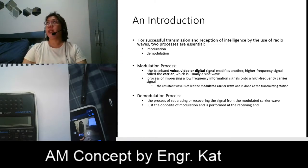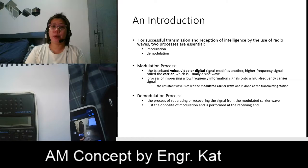Our information is transported between the transmitter and the receiver in the form of some transmission medium. Our information signals are called baseband information — they are in the form of voice, video, or digital signal. The problem is these original signals are often not suitable for transmission, so they must be transformed from their original form to a form that is more suitable for transmission.